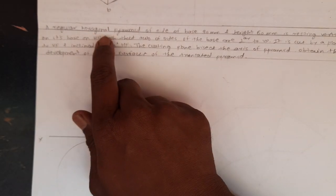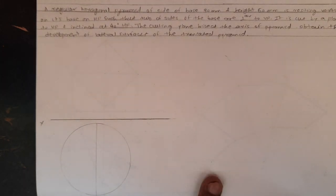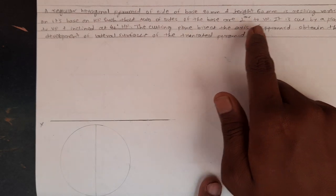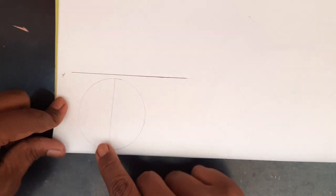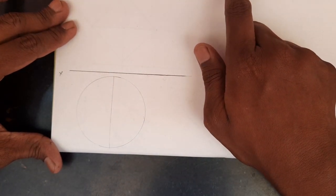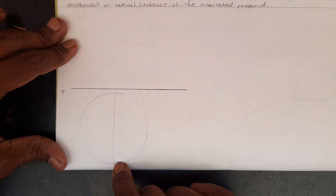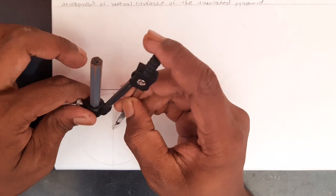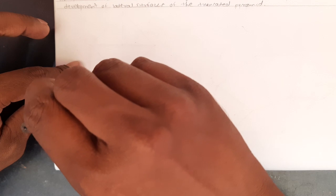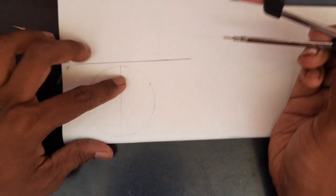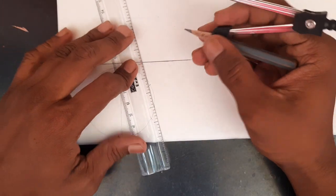In the statement, we are given a regular hexagonal pyramid, so its top view is a hexagon and its front view is a triangle. The hexagonal pyramid is resting on HP such that two sides are perpendicular to VP. I have drawn a circle of radius 30 mm, since the hexagonal base size of 30 mm is given. I connect the vertical diameter, then keeping the same 30 mm distance in the compass, I put it at the two terminal ends of the diameter and cut the circle, then join the six points to get the hexagon of size 30 mm.